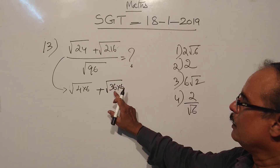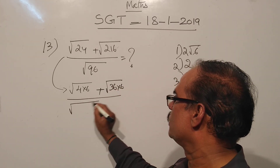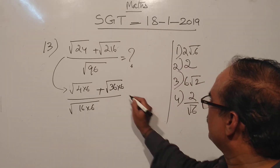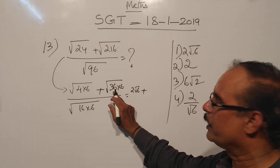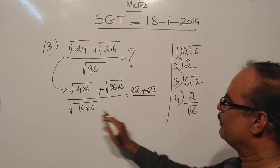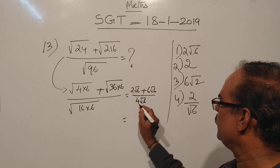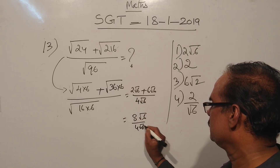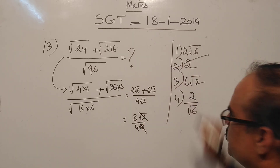We have to choose: 6 cube and 36 into r. At the same time, 96 is 16 into r. This is 4 to 4, which is 2 root 6. Plus 36 to 6, which is 6 root 6. Divide by 16 to 4, which is 4 root 6. That gives 8 root 6 by 4 root 6, which is 4 root 6. The answer is the second option.